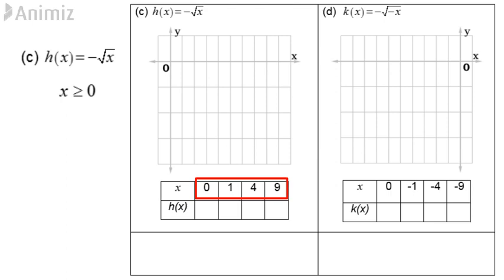We can pick x equal to 0, 1, 4, 9. Any perfect square numbers will do. Adding x equals 0 into negative square root x gives us negative square root 0, which is also 0. Adding x equals 1 into negative square root x gives us negative square root 1, which is equal to negative 1. Adding x equal to 4 and 9 respectively into negative square root of x gives us negative 2 and negative 3.